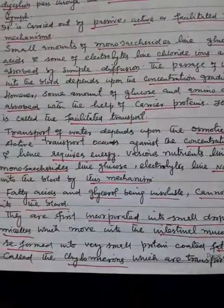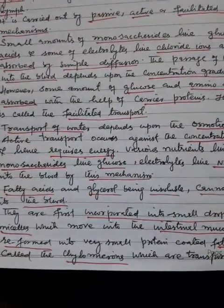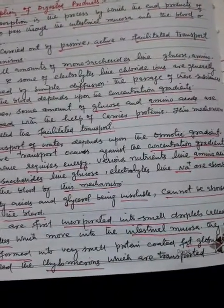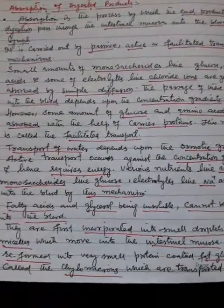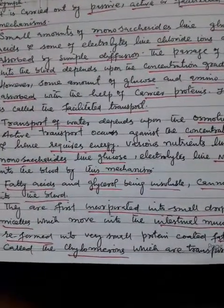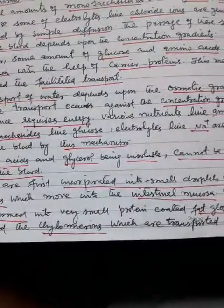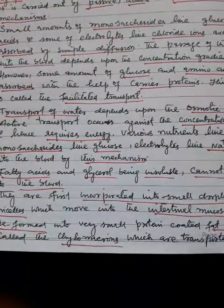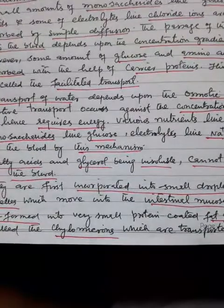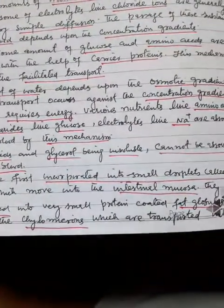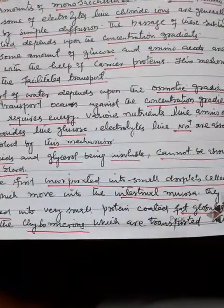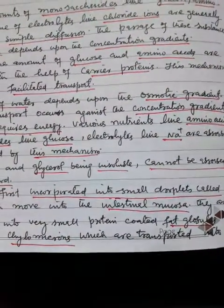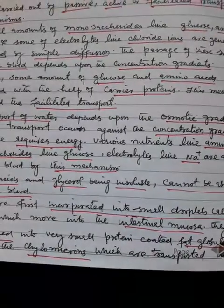Fatty acids and glycerol, being insoluble, cannot be absorbed into the blood. They are first incorporated into small droplets called micelles, which move into the intestinal mucosa. They are then reformed into very small protein-coated fat globules called chylomicrons, which are transported into the lymph vessels.